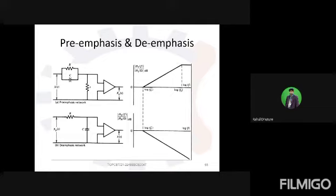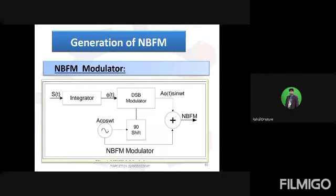The de-emphasis circuit is used in the receiver. This is a very important topic related to frequency modulation. This is a very important chapter for FM generation. After that, we discuss the generation of narrowband FM and generation of wideband FM. Most of the time we have to use the direct method and indirect method, but direct and indirect methods are used for wideband FM.